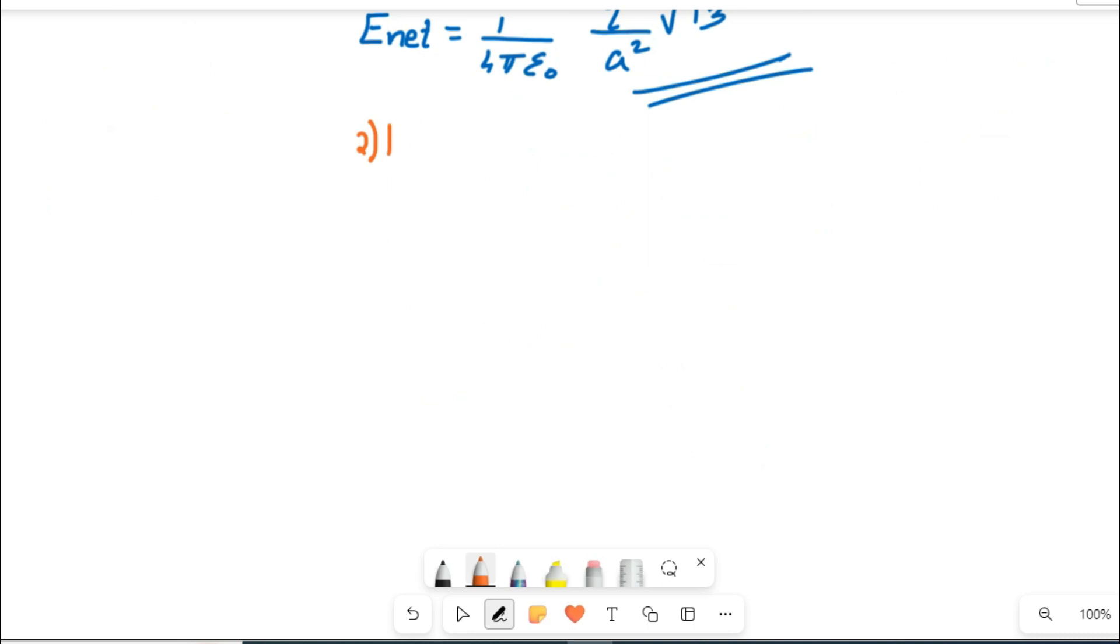Now we will answer the second part, that is the direction part. So for direction I am going to write the equation we used in the previous question. When we study about the parallelogram law of vectors there were two things: one is magnitude of the resultant and direction of the resultant.